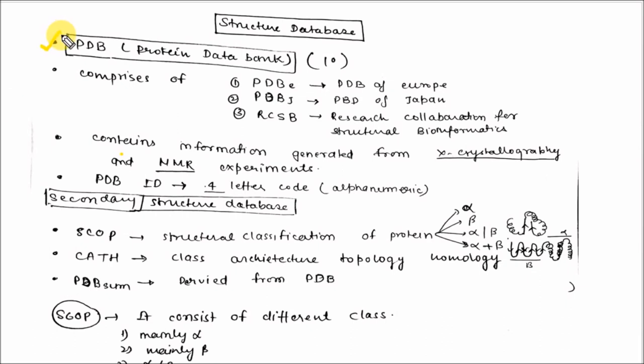The very important structure database is PDB (Protein Data Bank), a primary structure database comprising PDB-E (Protein Data Bank of Europe), PDB-J (Protein Data Bank of Japan), and RCSB (Research Collaboration for Structural Bioinformatics). It contains information generated from X-ray crystallography and NMR experiments.